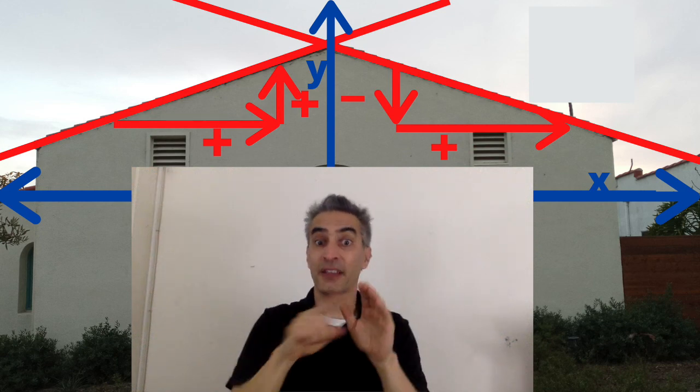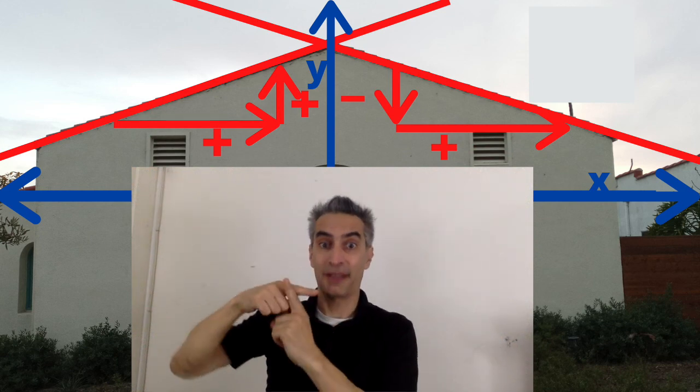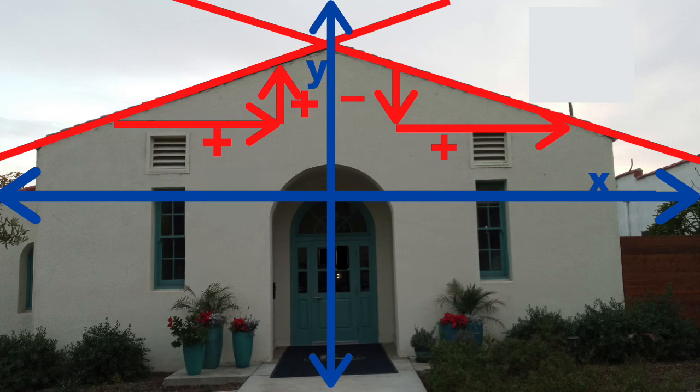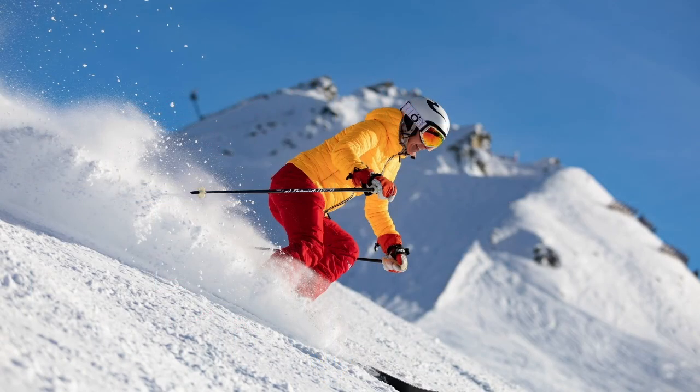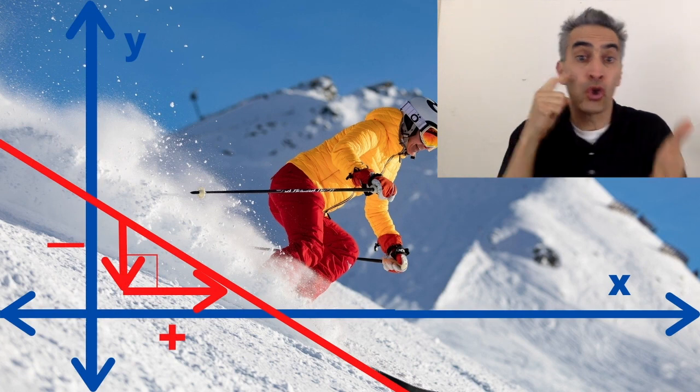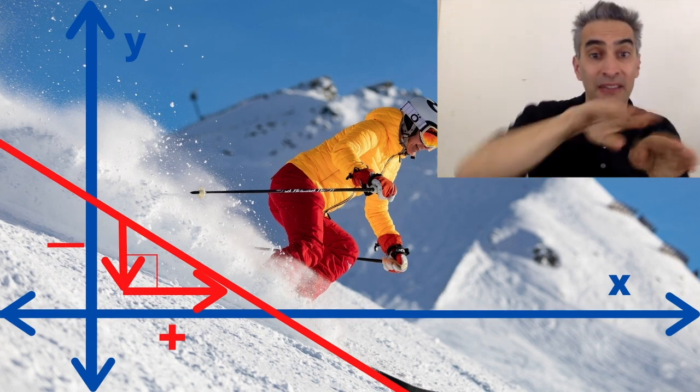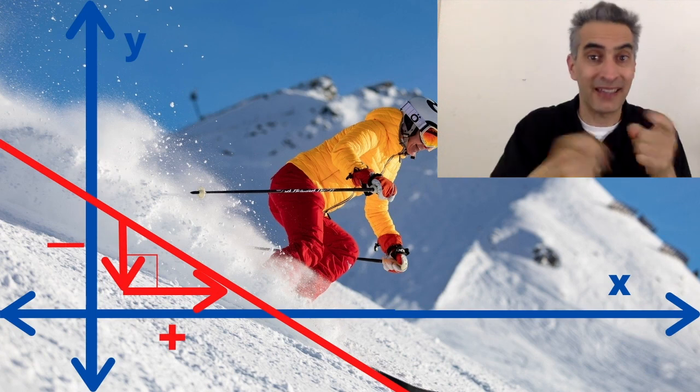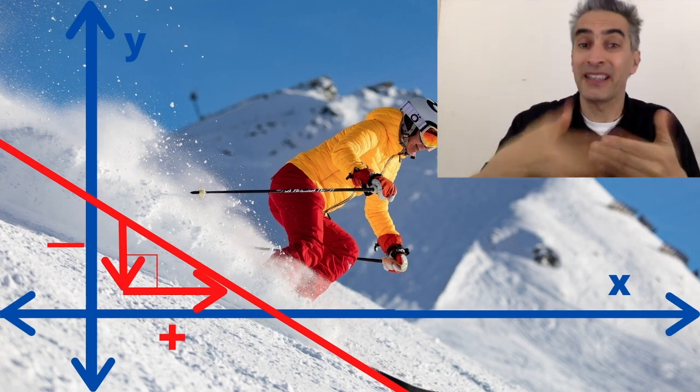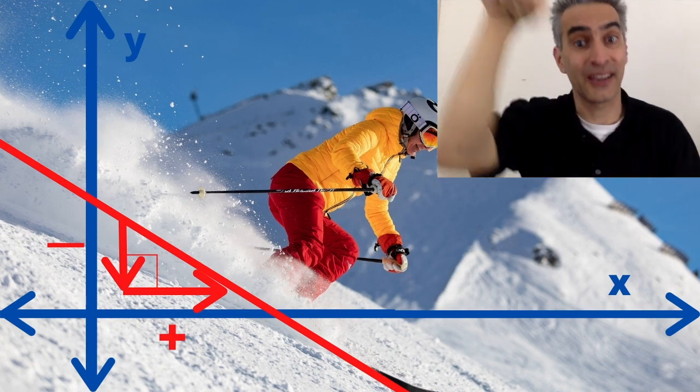Notice the slope on the right is negative and the slope on the left is positive. Notice the mountain has a negative slope. You can't ski up it, it's easier to ski down.